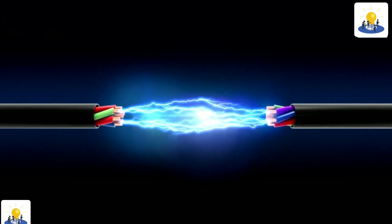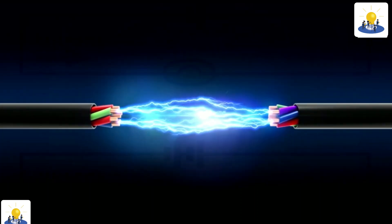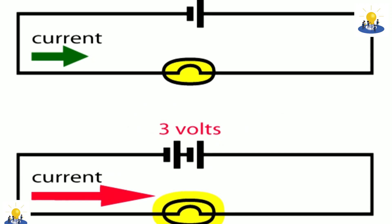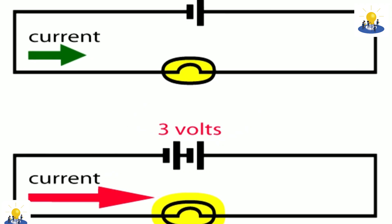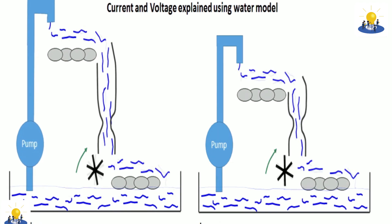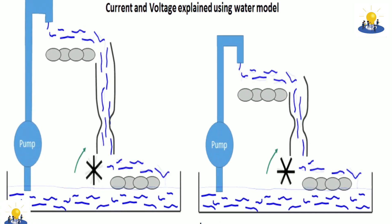In its natural state, the electrons in a conductor such as copper freely move from atom to atom, but in a completely random way. To get them to move together in one direction, all you have to do is give them a push.